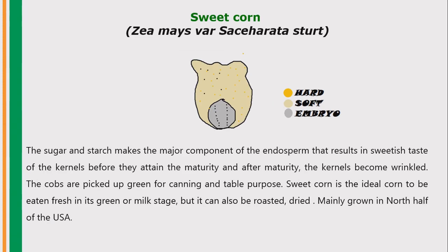Next, sweet corn — Zea mays var. saccharata. It consists of a soft central part and embryo. Sugar and starch make up the major components of the endosperm, which results in the sweetest state of the kernel before maturity. After maturity the kernels become wrinkled. The cobs are also picked green for canning and table purposes. In India, sweet corn is used for making dishes like manchurian. It is the ideal corn to be eaten fresh in its green or milky stage, but it can also be roasted or dried. It is mainly grown in the northern half of the USA.